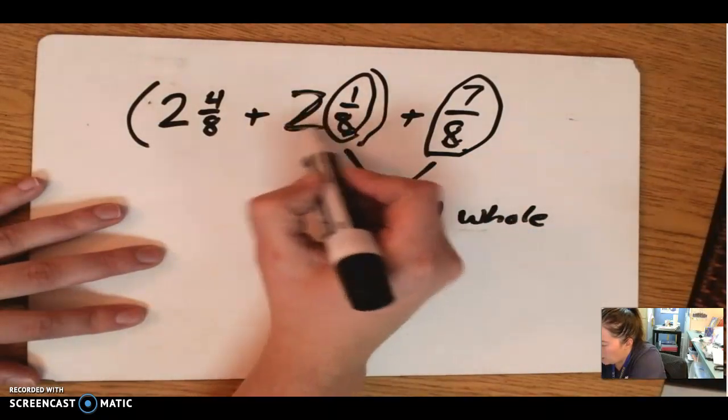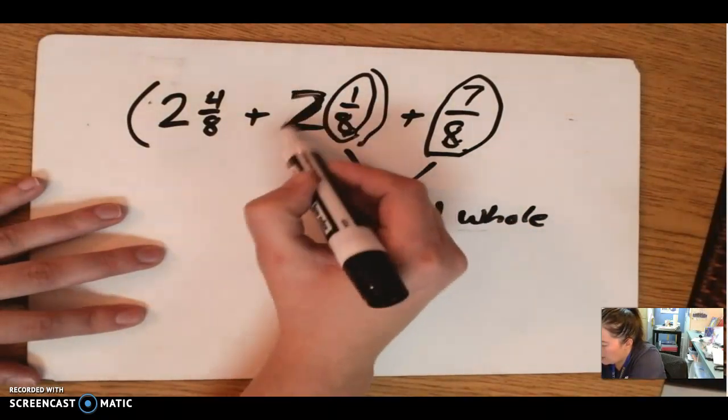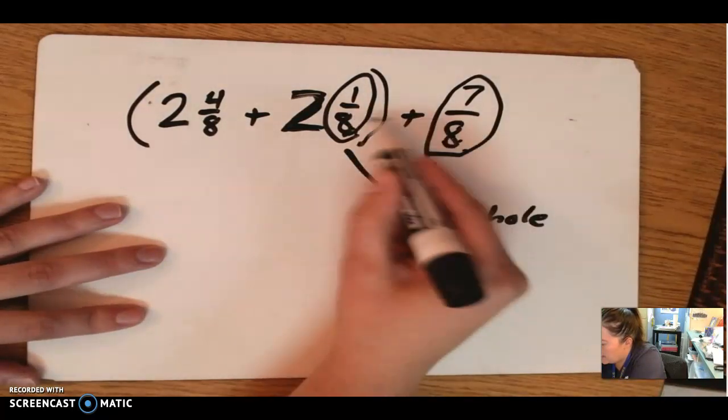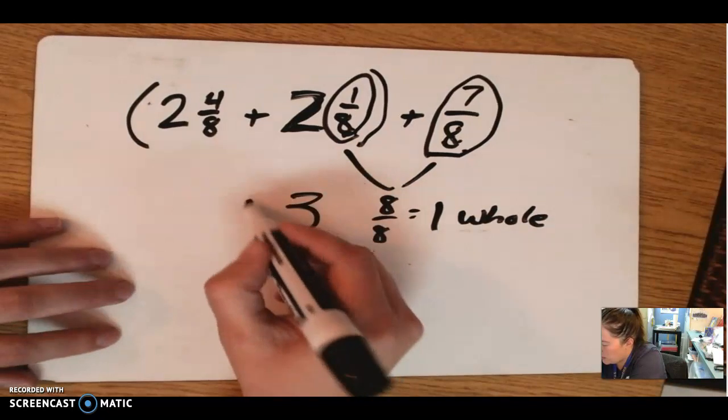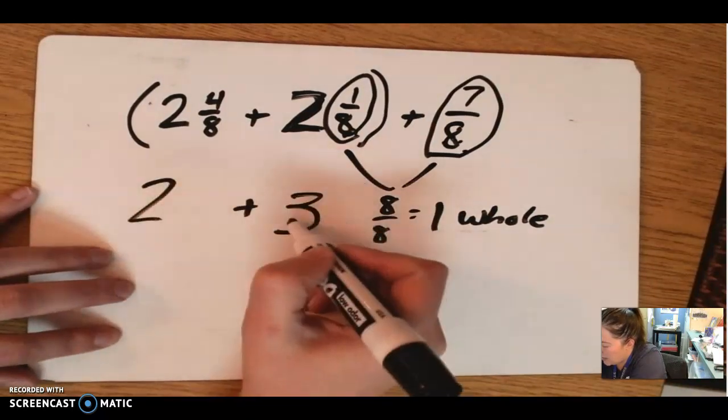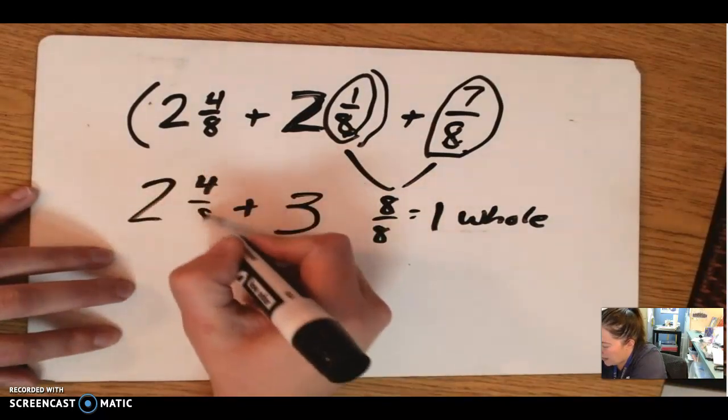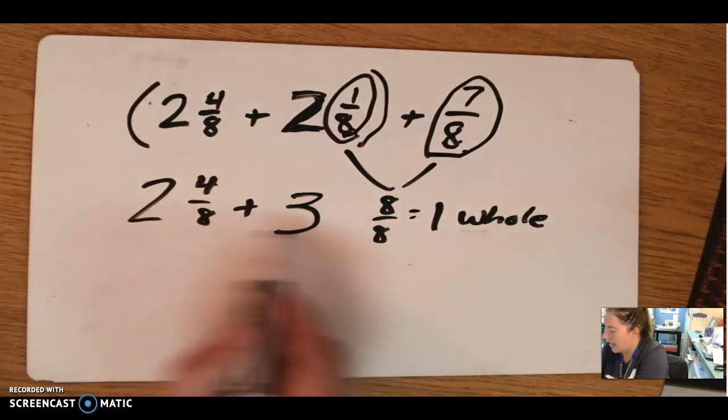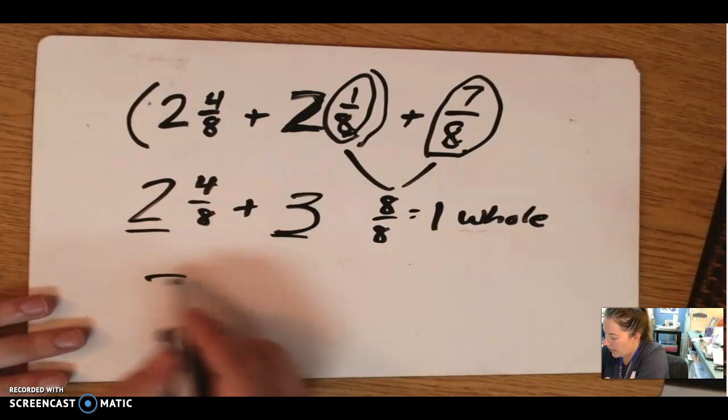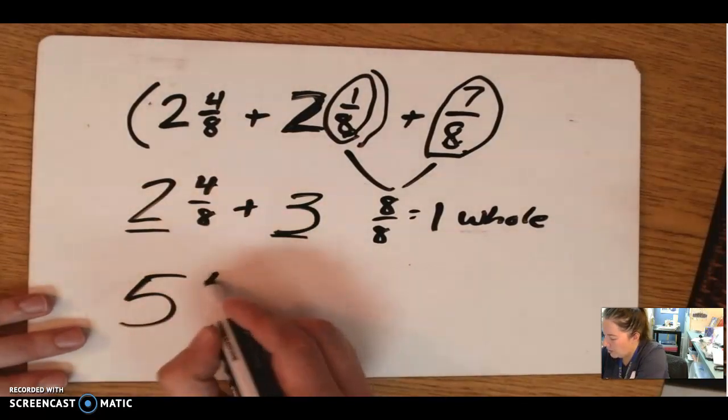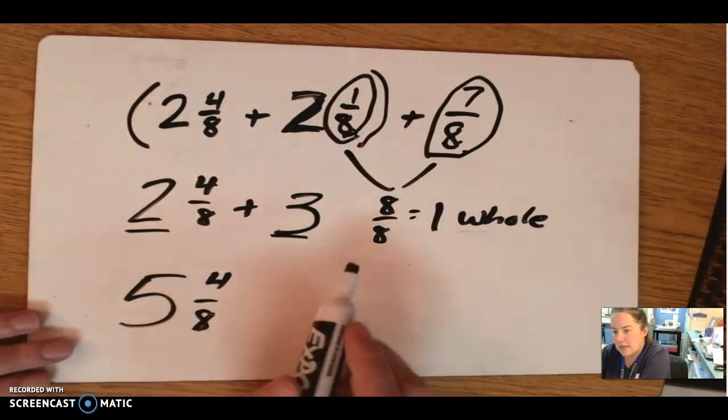So if I combine these, 1 whole, with these 2 wholes already, so that's 2 plus these 2 together would be 1, I know that's 3 total. So now it's a whole lot easier. I can do 3 plus 2 and 4 eighths, and all I have to do now is add the whole numbers.